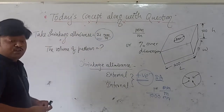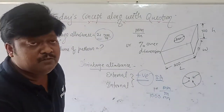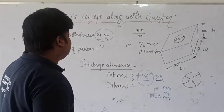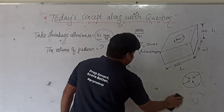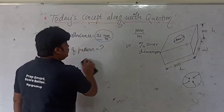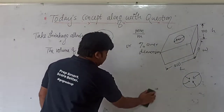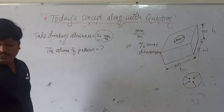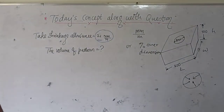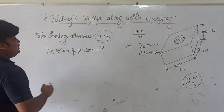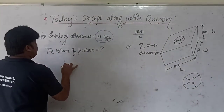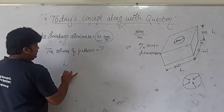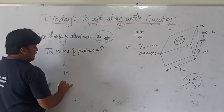We are going to find out the dimensions of the pattern after providing the shrinkage allowance. So we will calculate the length, then the width, then the height, and of course the bore diameter.